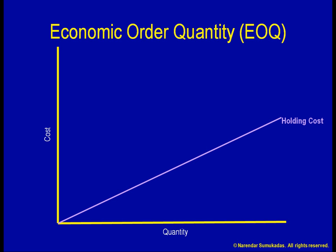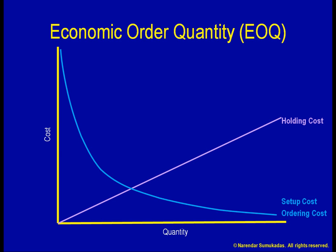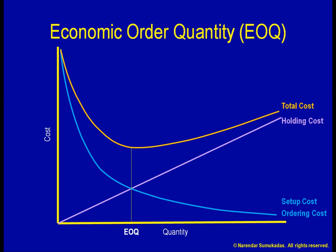However, larger batches mean fewer purchasing orders placed, which reduces the ordering cost. Or, if we are producing something instead of purchasing it, larger batches mean fewer setups, which reduces the setup cost. Our total cost will be minimized if we set our batch size equal to the EOQ.